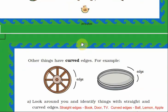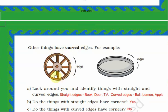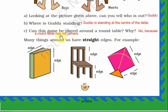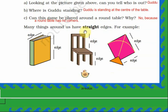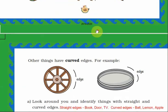For an object with curved edges, such as a wheel, you cannot see any corners — there are no corners for a curved object. That is why the corner game cannot be played on a round table. The things with curved edges have no corners. Curved things do not have corners.